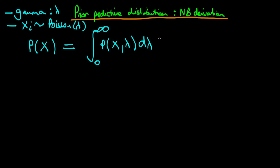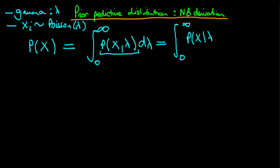Furthermore, we know that we can decompose this joint probability using the conditional probability rule into the integral from 0 to infinity of the probability of x given lambda times the probability of lambda, integrated with respect to lambda.